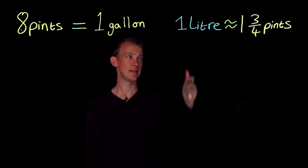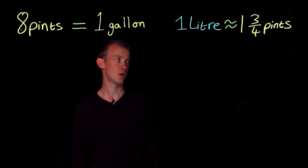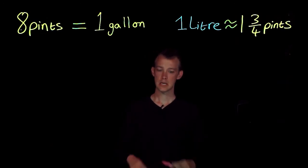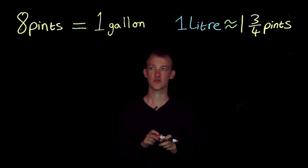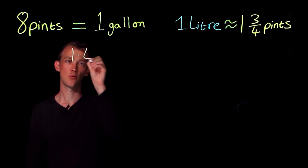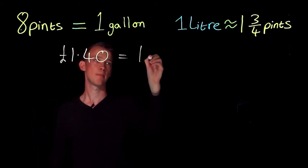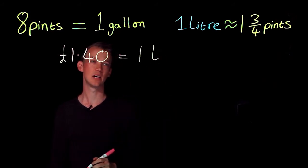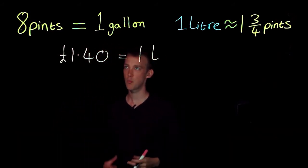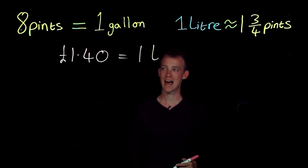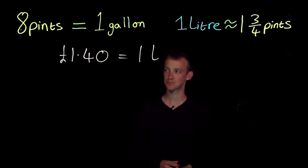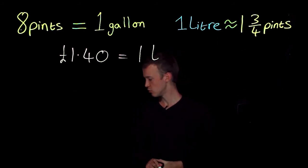Now let's imagine that the cost of petrol is one pound 40, and for paying one pound 40 you would get one liter of petrol. Let's try and work out the cost of one gallon. So I'm trying to find one gallon.